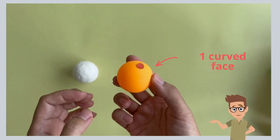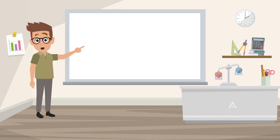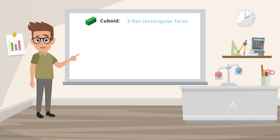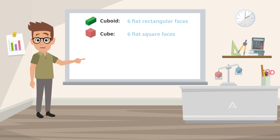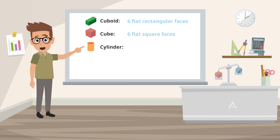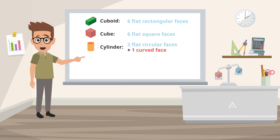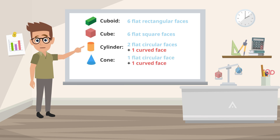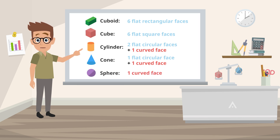Let us summarize the faces of the different solids we have learned. A cuboid has six flat rectangular faces. A cube has six flat square faces. A cylinder has two flat circular faces and one curved face. A cone has one flat circular face and one curved face. And a sphere has only one curved face.